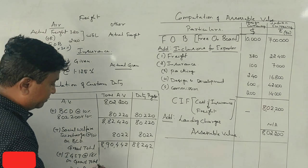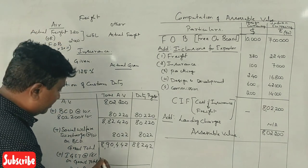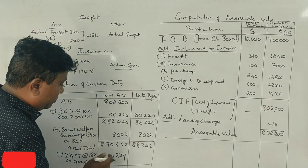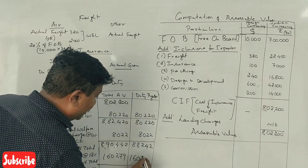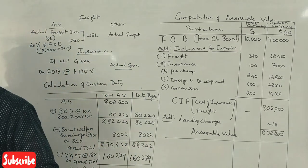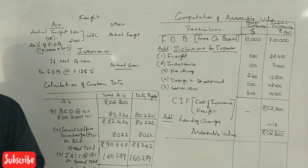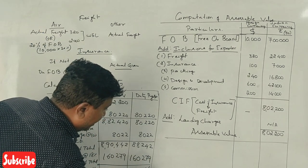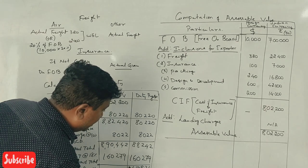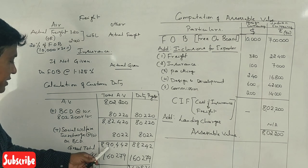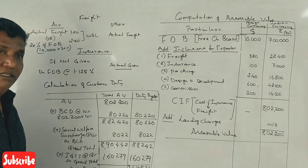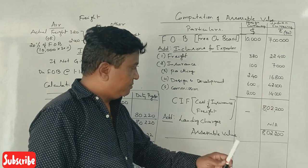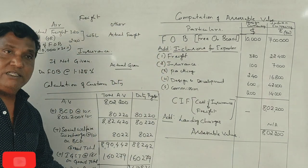IGST at 18% is applied on the grand total of ₹8,90,442. 18% of ₹8,90,442 equals ₹1,60,279. Final total customs duty payable works out to approximately ₹10,50,721.